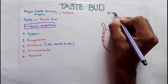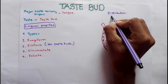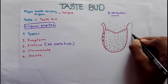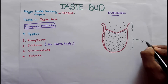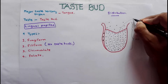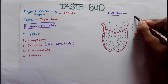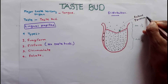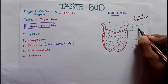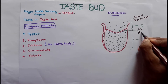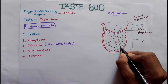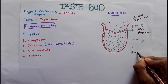Now let's see the distribution of these lingual papillae on the tongue. There is a V-shaped ridge which divides the superior surface of the tongue into anterior two-thirds and posterior one-third, and this ridge is known as the sulcus terminalis.